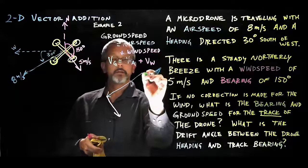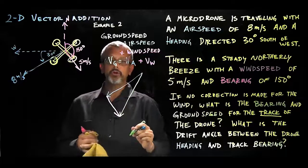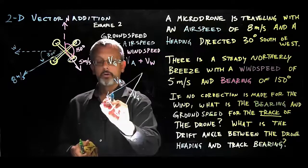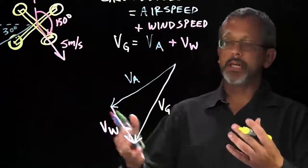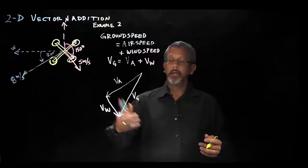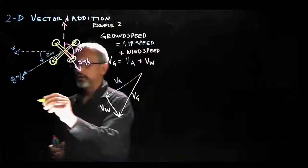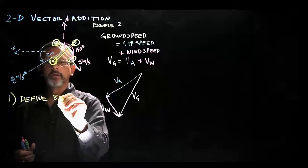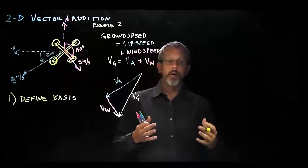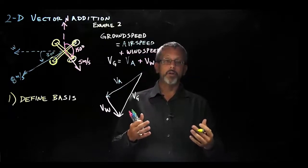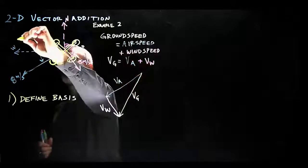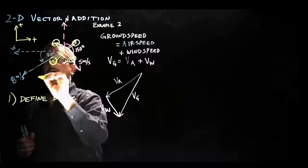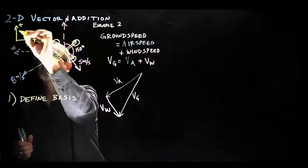There is our 5 meters per second. What we're looking for is the addition of those two — there is our ground speed as a combination of our airspeed and wind speed. Now we work through our process. The first step is to define a basis: north as positive for our y-axis, and east as positive for our x-axis. So x positive means east, negative means west; y positive means north, negative means south.